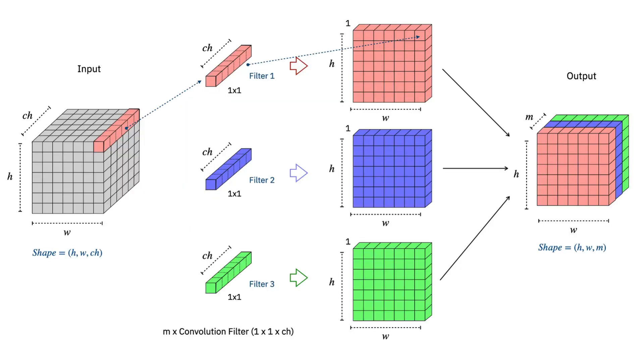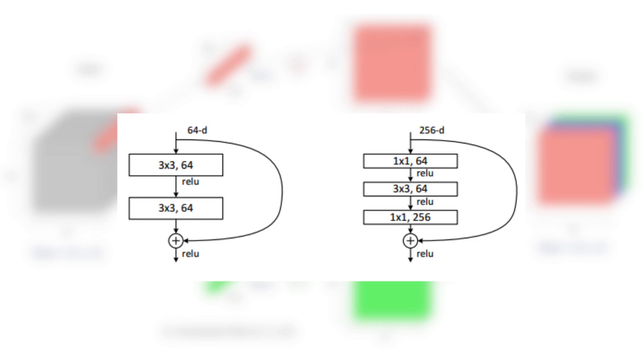Summarizing this whole thing, if you have a volume of width W and height H with the number of channels CH, you can create N 1x1xCH filters that will output N H by W by 1 filters that will then be concatenated together.